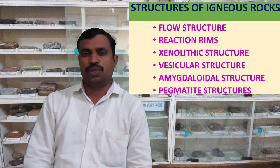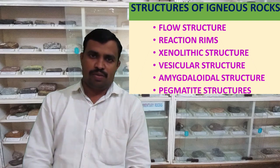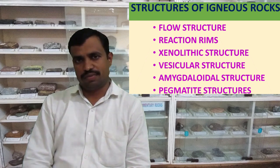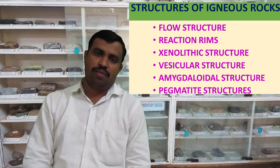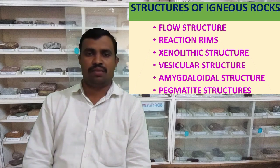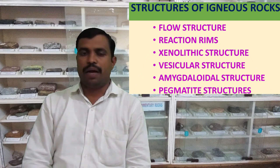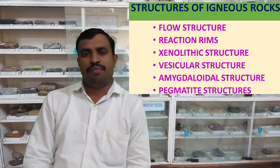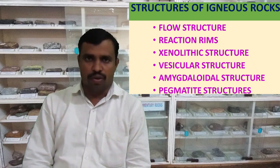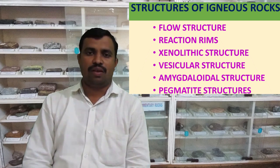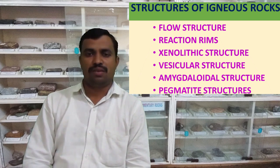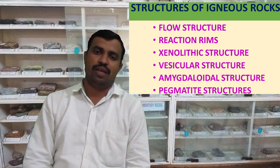Hi friends, welcome to GeoEntire, that is all about the Earth. Today I am going to share a video on the structures of igneous rocks. Igneous rocks are nothing but the cooling and crystallization product of magma, and magma is the molten material of the rock. When such rocks are formed, these igneous rocks show some structures. In this video I am going to share what are the different structures present in igneous rocks.